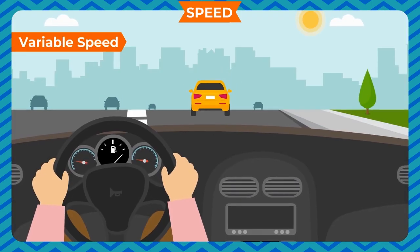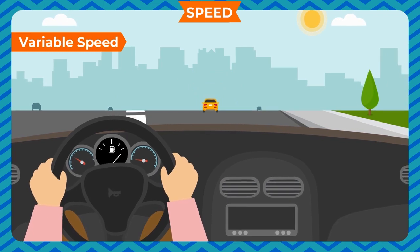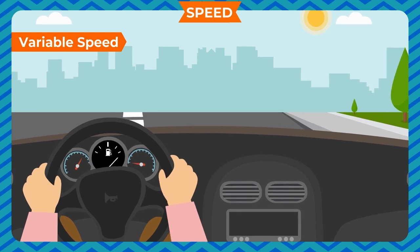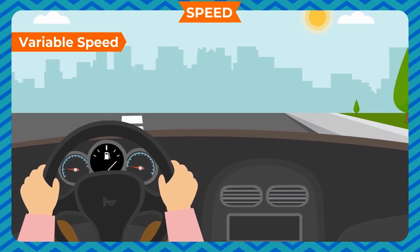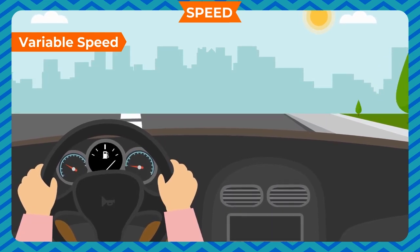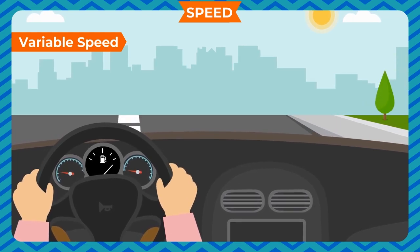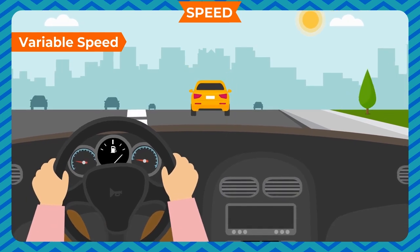Variable Speed: A body is said to be moving with variable speed if it covers unequal distances in equal intervals of time or equal distances in unequal intervals of time, however small the time interval may be. For example, a car moving on a busy market street.